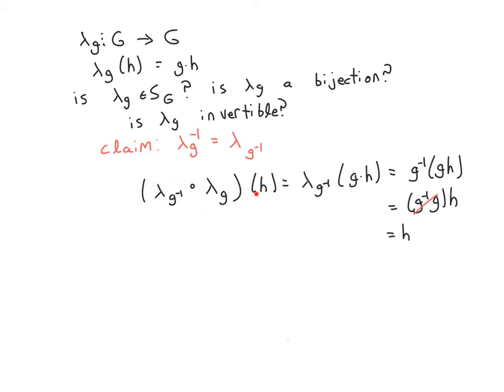If I apply this composition of two functions to H, well, by definition, lambda of G of H is G times H. So I have lambda of G inverse of GH. Lambda of G inverse is just left multiplication by G inverse. So this ugly-looking thing, it's just this triple product. Multiplication is associative, so I can move the parentheses over. G inverse and G cancel each other out, and I do get H.